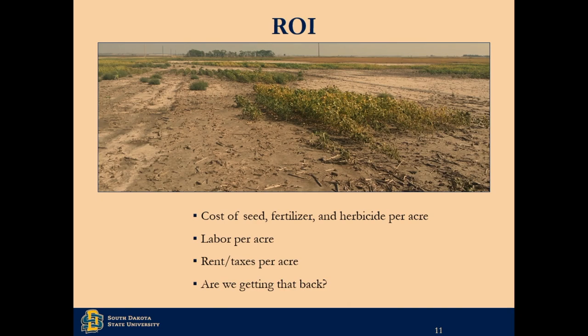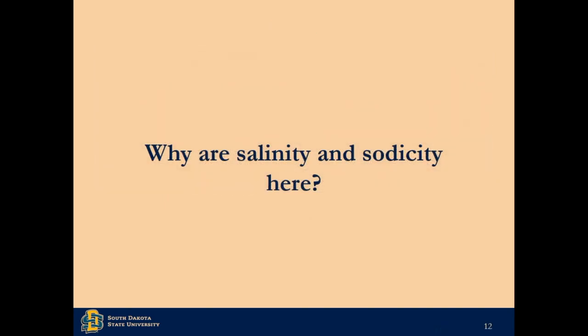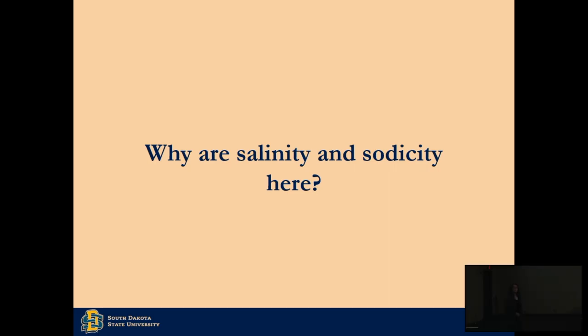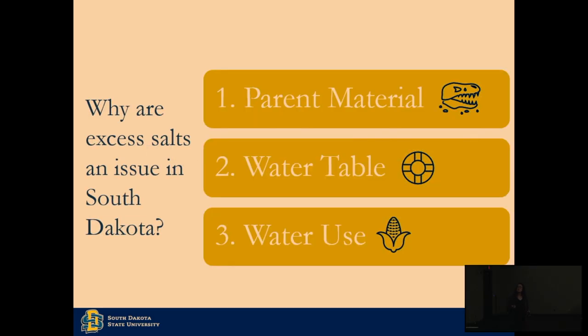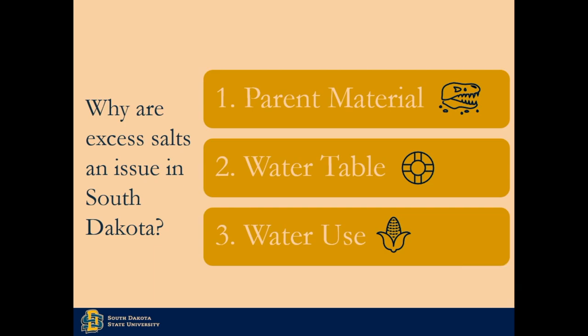This is a big problem in large portions of South Dakota and it's spreading, expanding. It's a problem that really showed up a lot in maybe the past few decades. So why is it here? We have three reasons: parent material, the water table, and water use. Not every farm will have this problem, but even if you don't, it's useful to know about — what if you expand your operation, or a neighbor has it? Just being a little bit aware goes a long way.